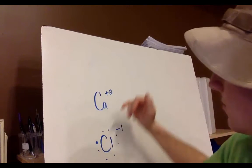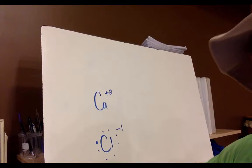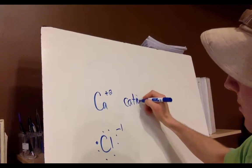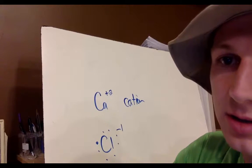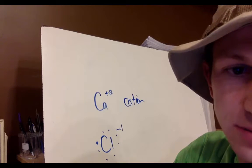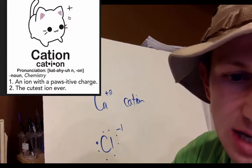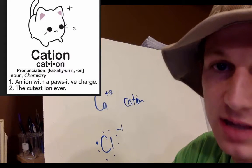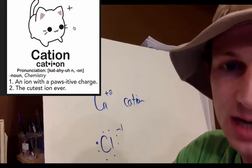If an element becomes a positively charged ion, we call it a cation. Cations have a positive charge — you can remember this because the word 'cation' contains a plus-like feel to it.